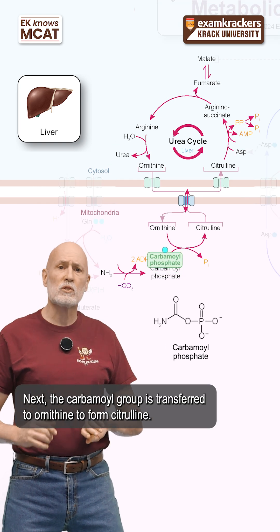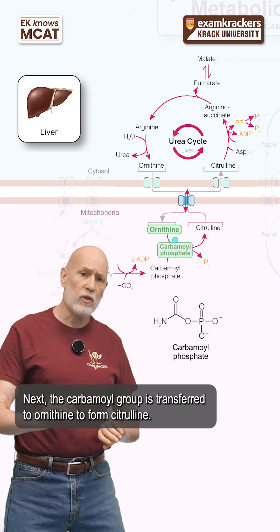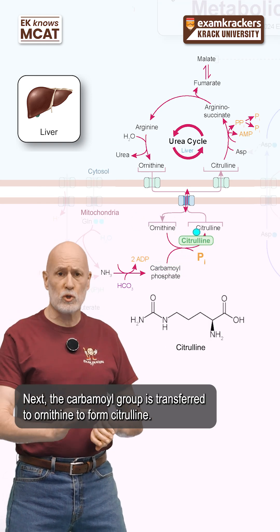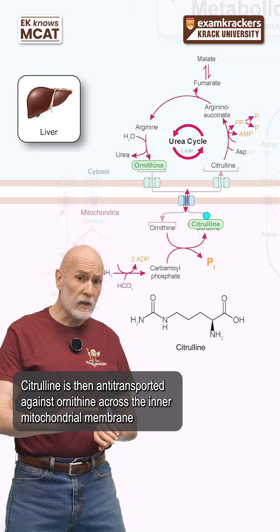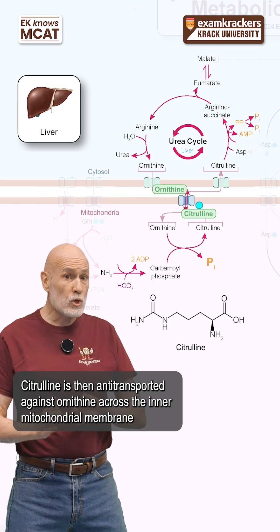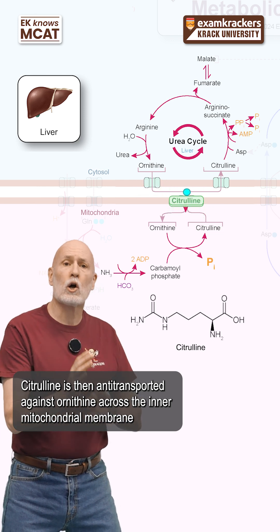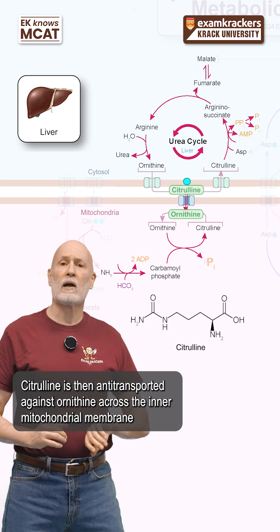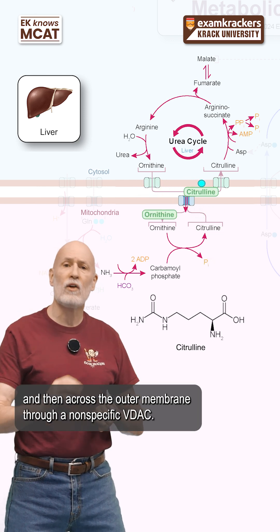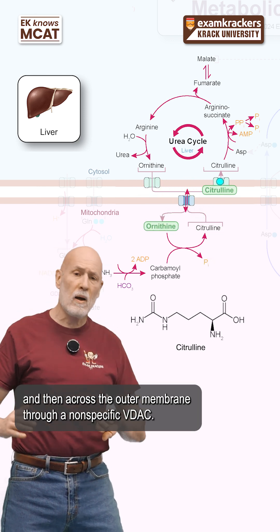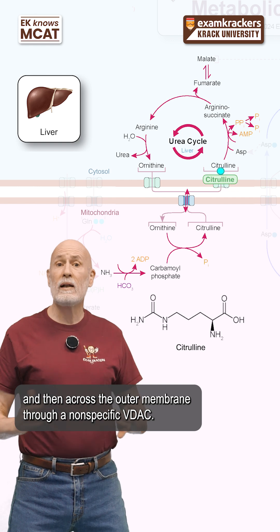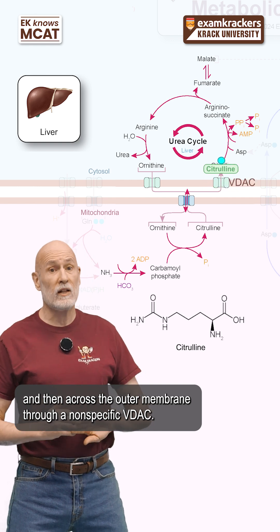Next, the carbamoyl group is transferred to ornithine to form citrulline. Citrulline is then antitransported against ornithine across the inner mitochondrial membrane and then across the outer membrane through a nonspecific VDAC.